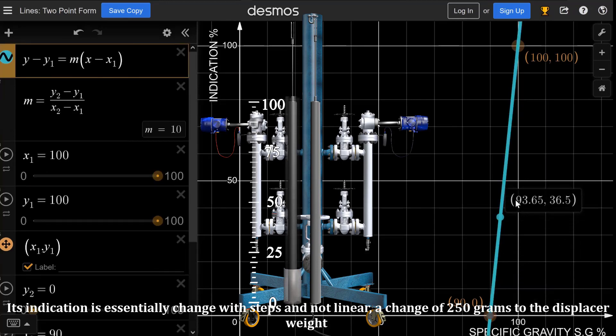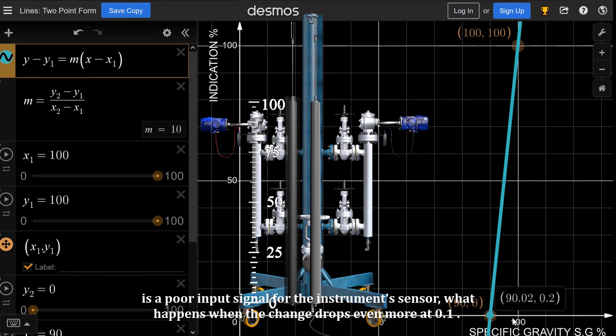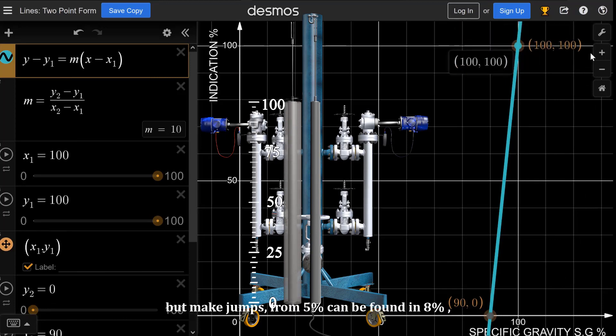A change of 250 grams to the displacer weight is a poor input signal for the instrument's sensor. What happens when the change drops even more at 0.1? Things are getting more difficult. The instrument does not change its indications with steps now, but makes jumps.